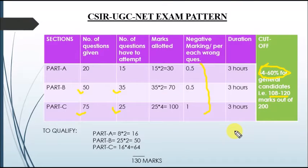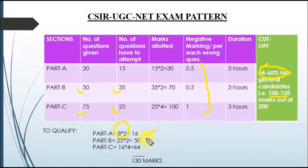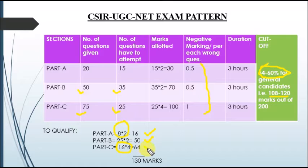To qualify the CSIR examination, you have to answer 8 questions correctly from Part A, 25 questions correctly from Part B, and 16 questions correctly from Part C. If you do that, you will definitely crack the CSIR examination.